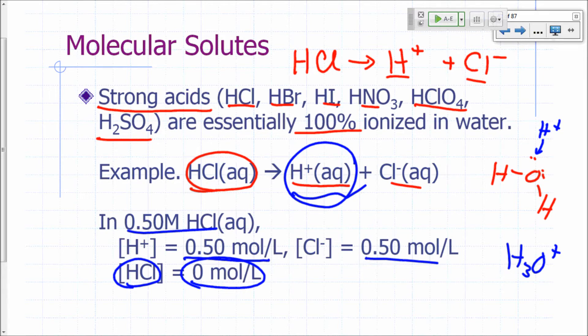So if you have a 0.5 molar solution of HCl, you're going to lose all of that 0.5 moles of HCl—you get 0.5 moles per liter of H⁺ and 0.5 moles per liter of chloride, and the HCl itself has pretty much none left. If I ask you what's the concentration of HCl molecules in a 1 molar HCl solution, it's going to be 0, because it's not going to be there anymore.